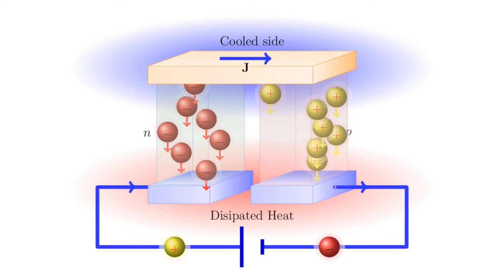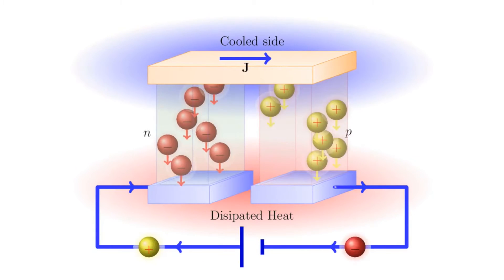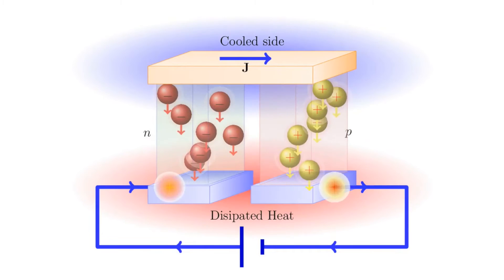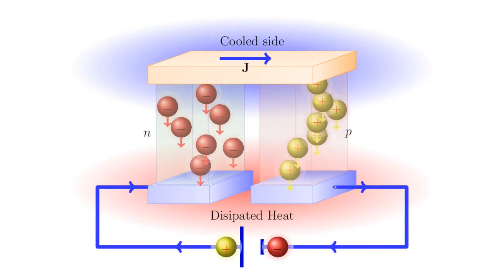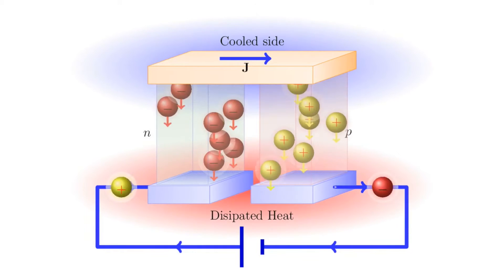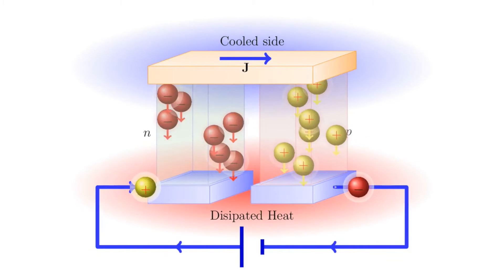How does it work? As simple as two semiconductor materials — in this case bismuth telluride is the most common used material — it has N-type electrons and P-type electrons, and when you apply a small current into it, it accelerates the heat in one direction, and this accelerates the heat in the other direction.